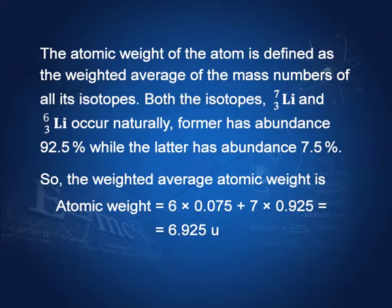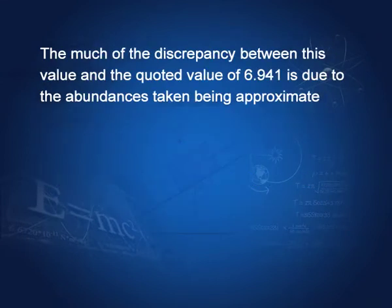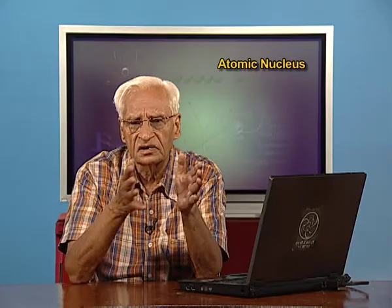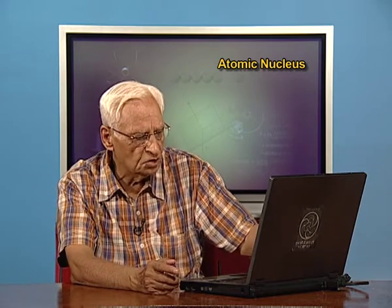Both isotopes, lithium-7 and lithium-6, occur naturally. Lithium-7 has an abundance of 92.5% while lithium-6 has an abundance of 7.5%. Averaging them: the atomic weight becomes (6 × 0.075) + (7 × 0.925) = 6.925 u. The discrepancy between this value and the quoted 6.941 is due to the abundances being taken as approximate — they differ slightly from these numbers.